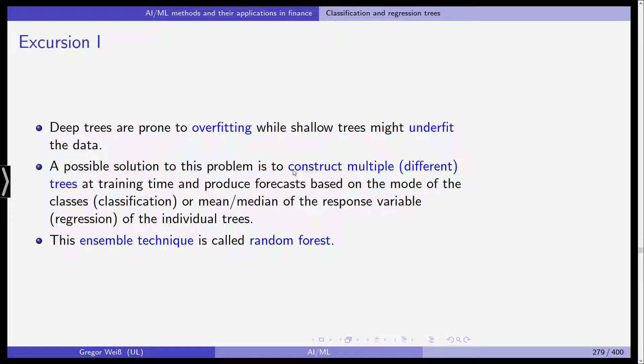So the variance bias trade-off is very important to consider in the context of classification trees and one possible solution to this problem is to construct multiple different trees at training time and produce forecasts based on the mode of the classes in classification or the mean or median of the response variable in the regression example of the individual trees. This is an ensemble technique called random forest.